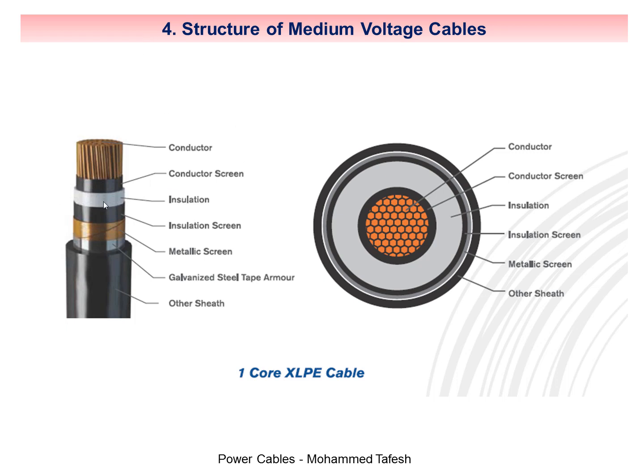The third layer, and the most important layer in the cable, is XLPE insulation — cross-linked polyethylene. Its function is to isolate the conductors from each other and isolate the cable layers from one another. Its purpose is to withstand the operating voltage and withstand the largest electrical voltage expected between the cable layers.